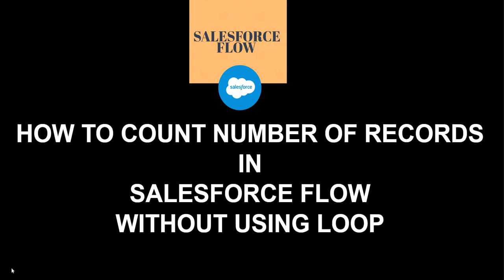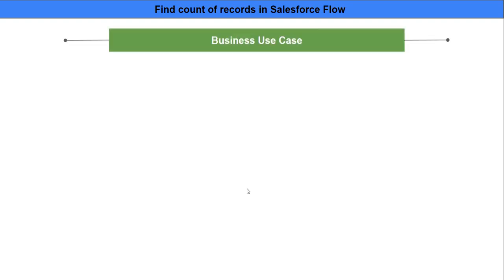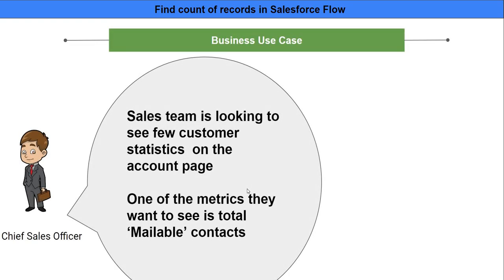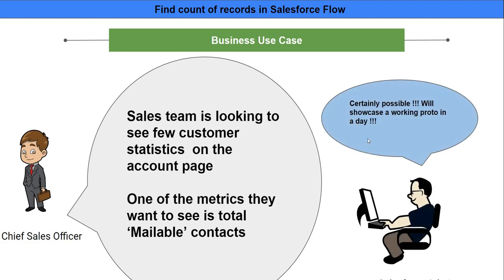In this video we're going to see how to calculate the total number of rows in Salesforce Flow without using a loop element. Let's learn this with a scenario. This is a business use case where the sales team is looking to find customer statistics on the account page. One of the key metrics they'd like to see is the total number of mailable contacts. Let's see how we can accomplish this in a simplified manner using Salesforce Flow.